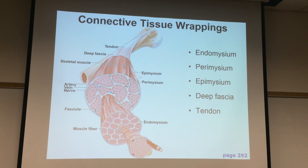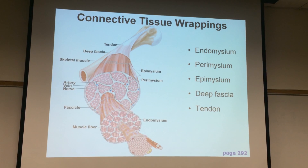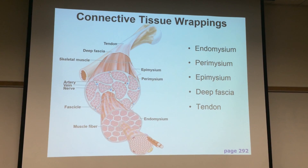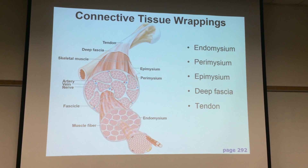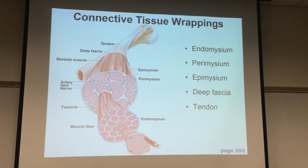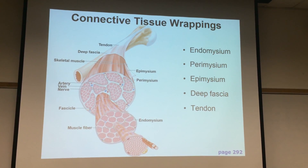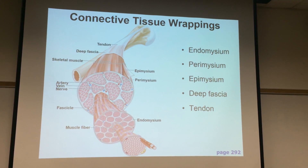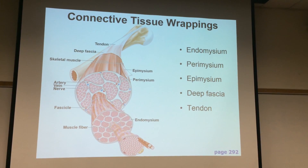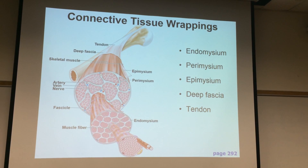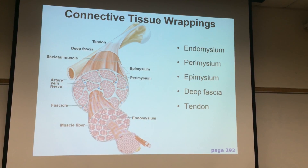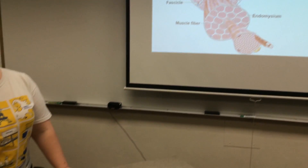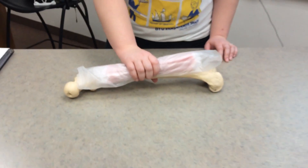In this video we're going to take a look at the connective tissue wrappings that surround each of the skeletal muscles in our body. Each muscle follows the same general pattern. In the specimen that we're going to look at today, we've removed the skin, the subcutaneous fat, the deep fascia that surrounds an entire group of muscles, and we've dissected all the way down till we're left with one muscle, the vastus intermedius, on a single femur bone.